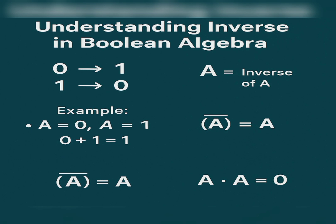So that's the basic concept of inverse in Boolean algebra. For an example where a equals zero and a equals one: zero plus one equals one, and a-bar — the inverse of a — is equal to a.